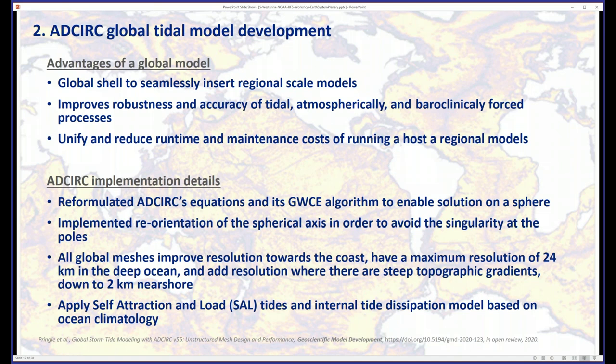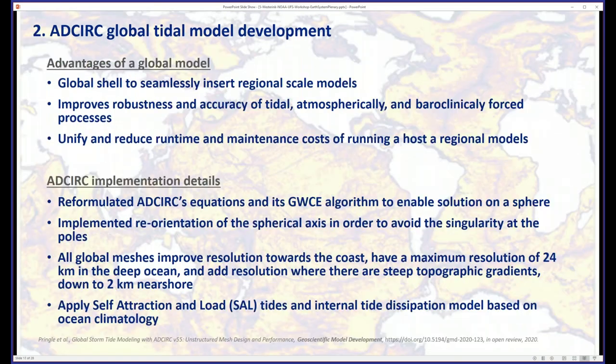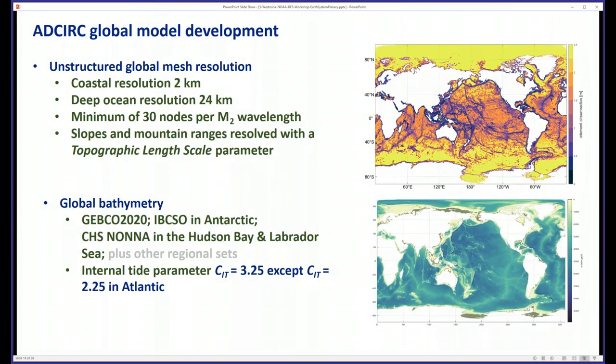There was a lot to do to go global. ADCIRC has a long history in regional modeling, and we went global. We have fun tricks up our sleeves — for example, we reoriented the North Pole so that it is now in Greenland to avoid the spherical singularity in the system.